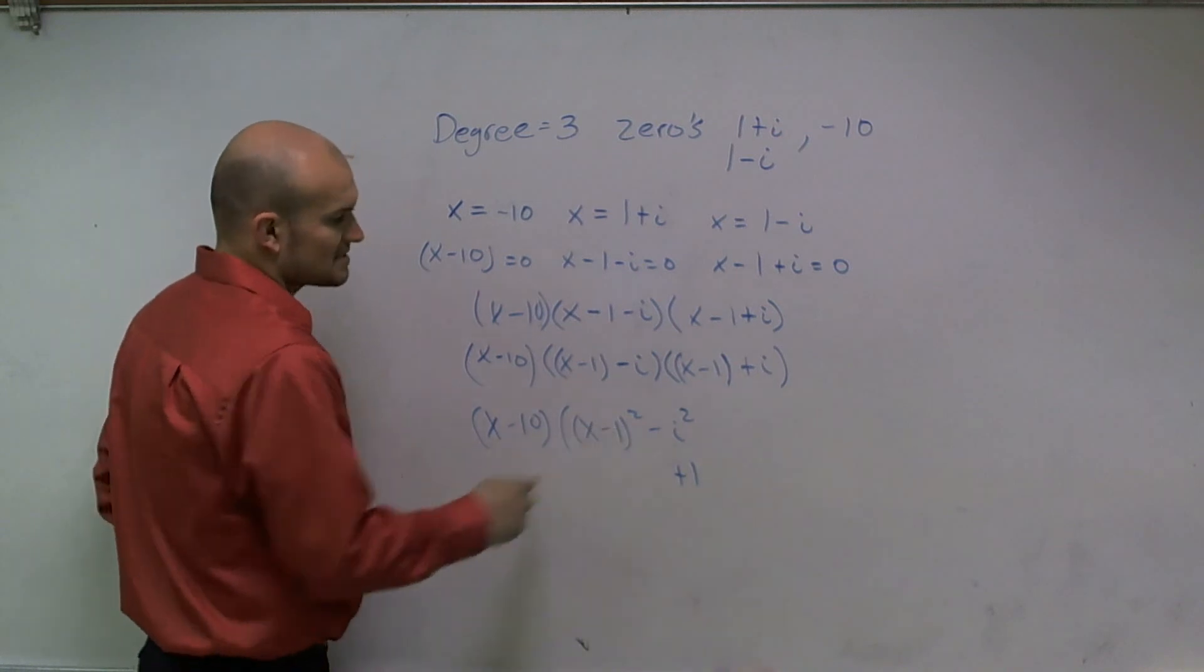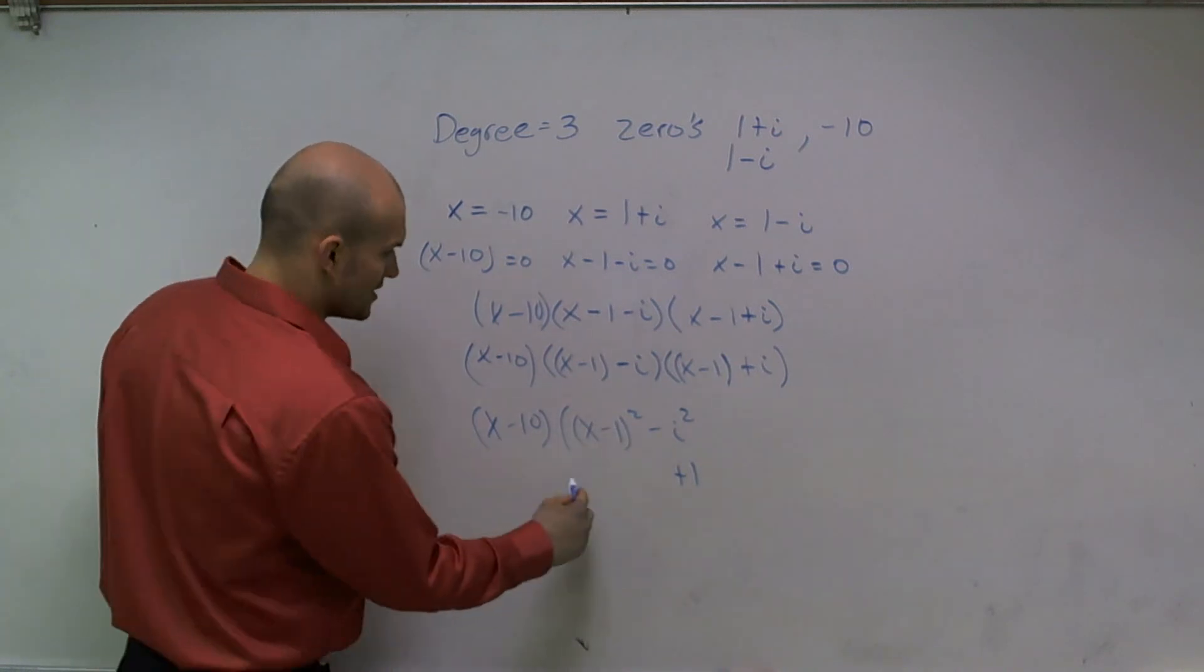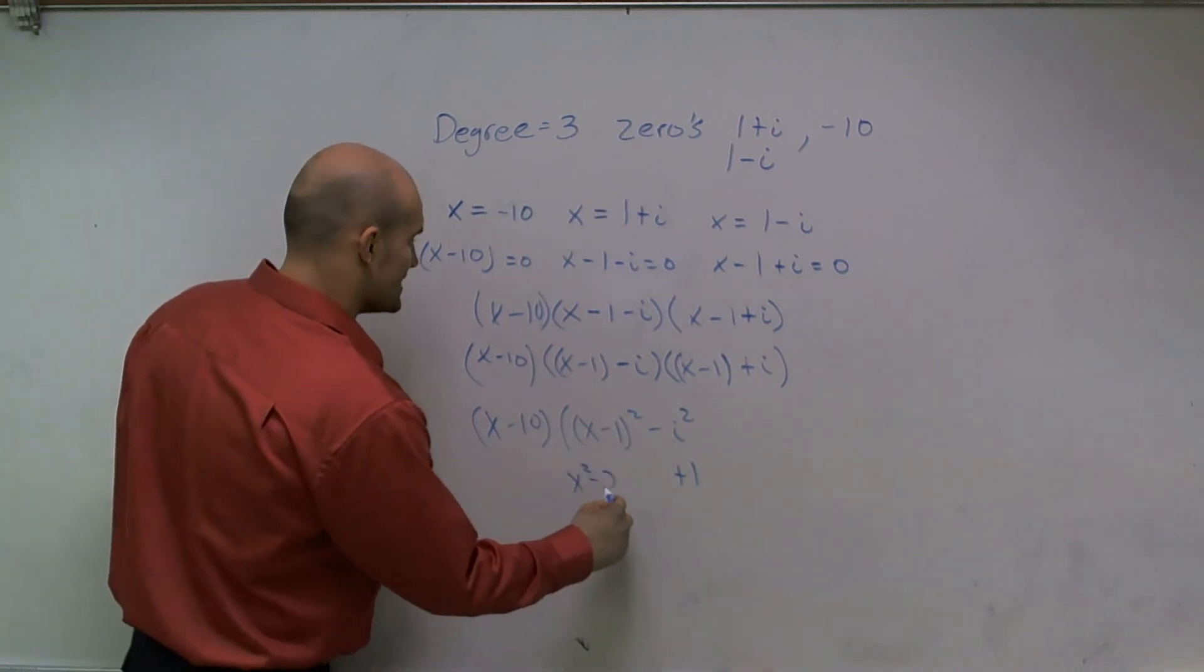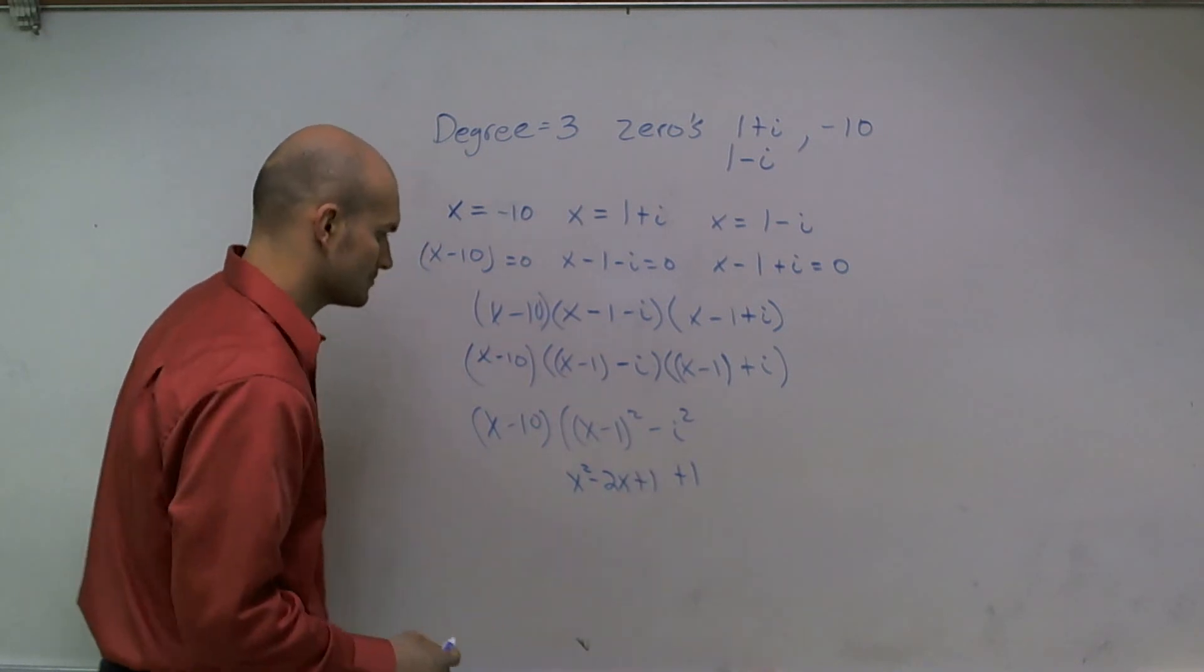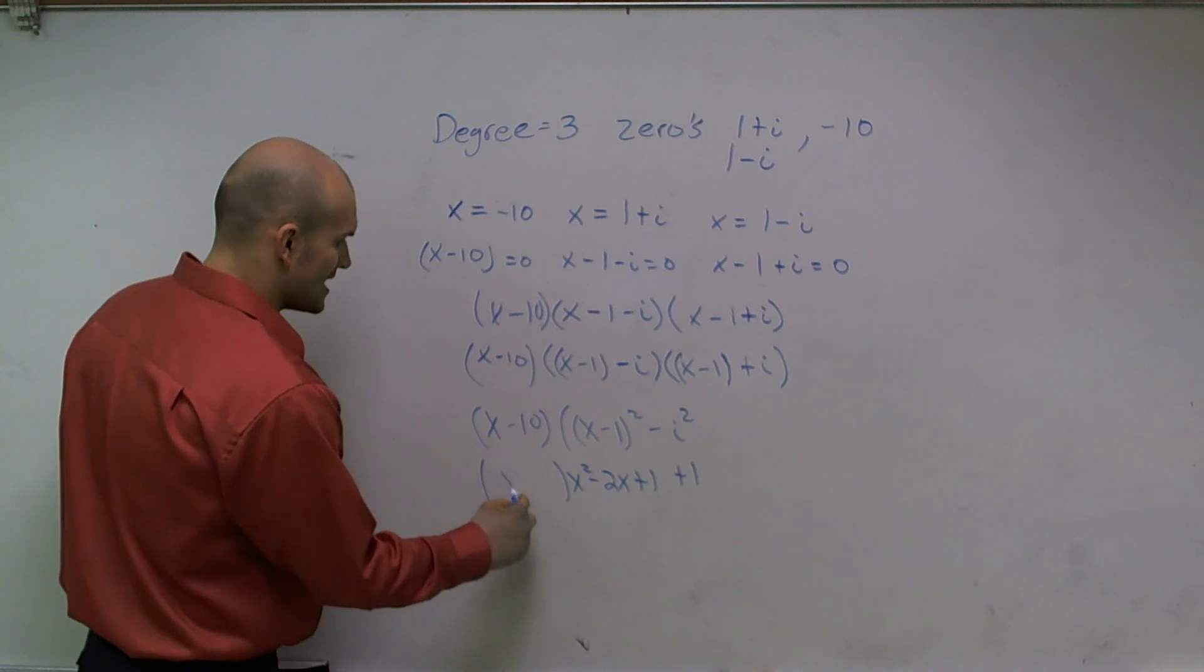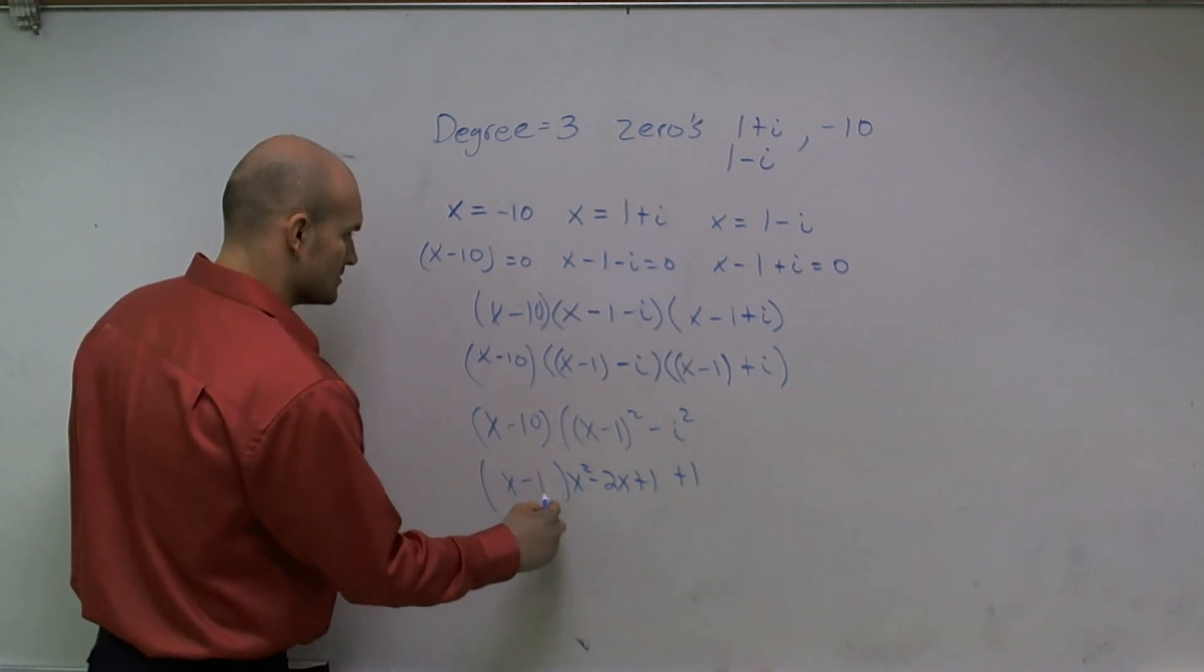All right, x minus 1 squared is going to give me x squared minus 2x plus 1. And then I need to multiply all that times x minus 10.